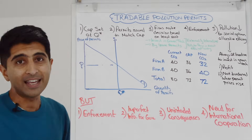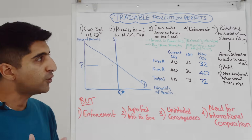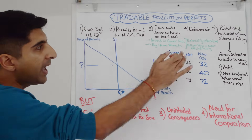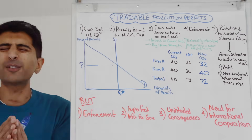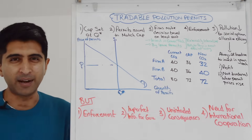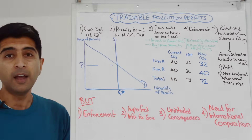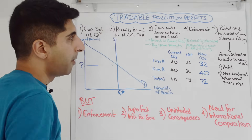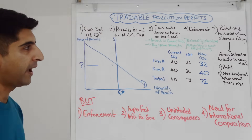The externality is always going to be internalized here. The polluter — the firm — is paying for the cost to society, paying for that externality, but in the most efficient and cost-effective way — and that is their choice. With strict enforcement, pollution will come down towards the socially optimum level, allocative efficiency will be achieved, and we get maximum welfare in the market.